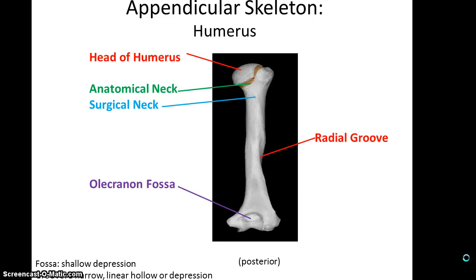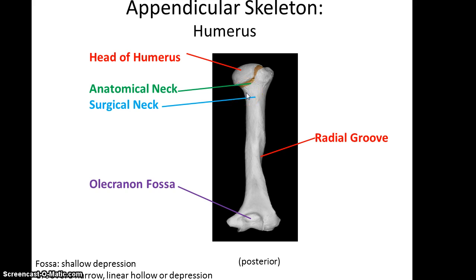In the posterior view you can see the head of the humerus, followed by its anatomical neck. A little further distal is what's referred to as the surgical neck, which is where the humerus often has many breaks occur. On the shaft you have the radial groove, which is a groove that blood vessels run along. And then the olecranon fossa, which is basically where the ulna is going to be able to fit when your arm is fully extended.